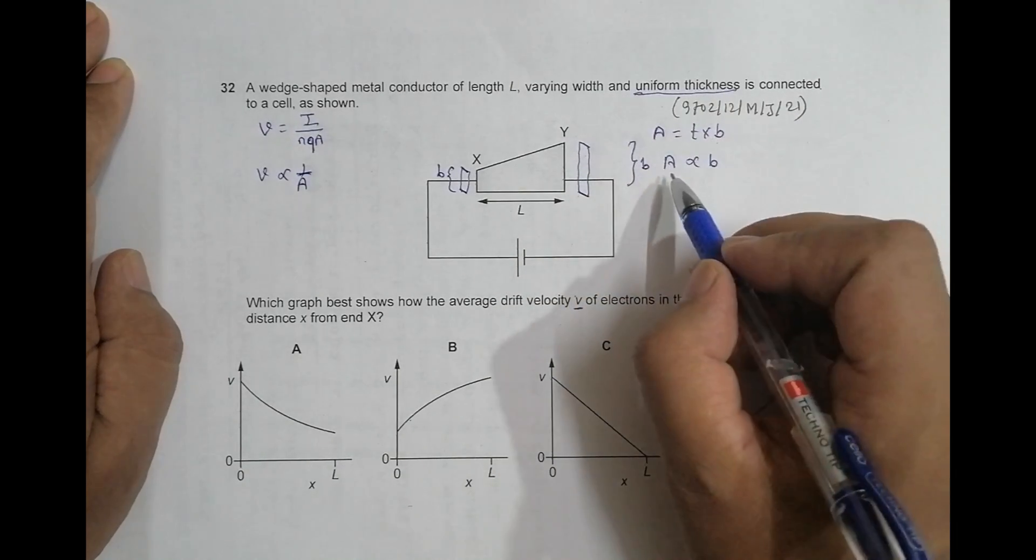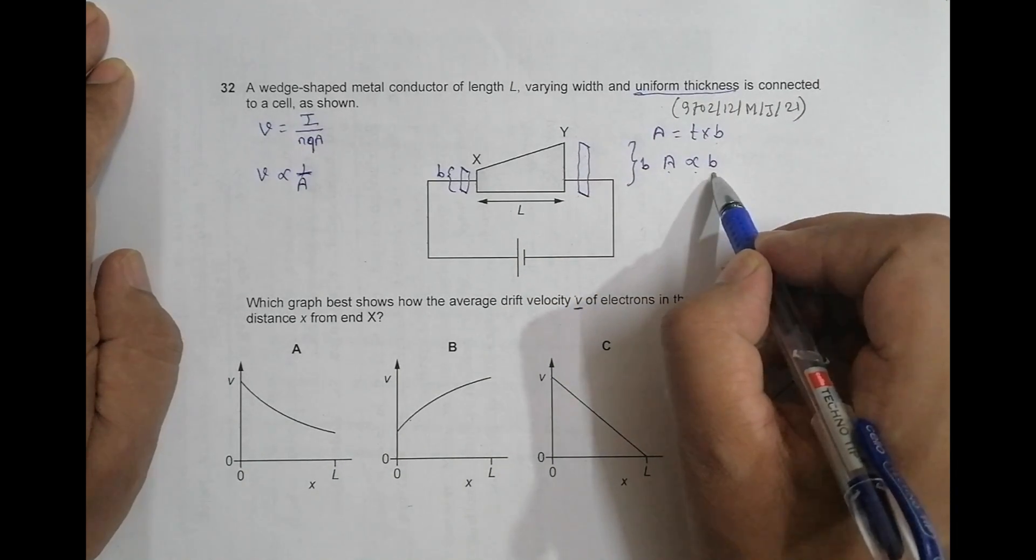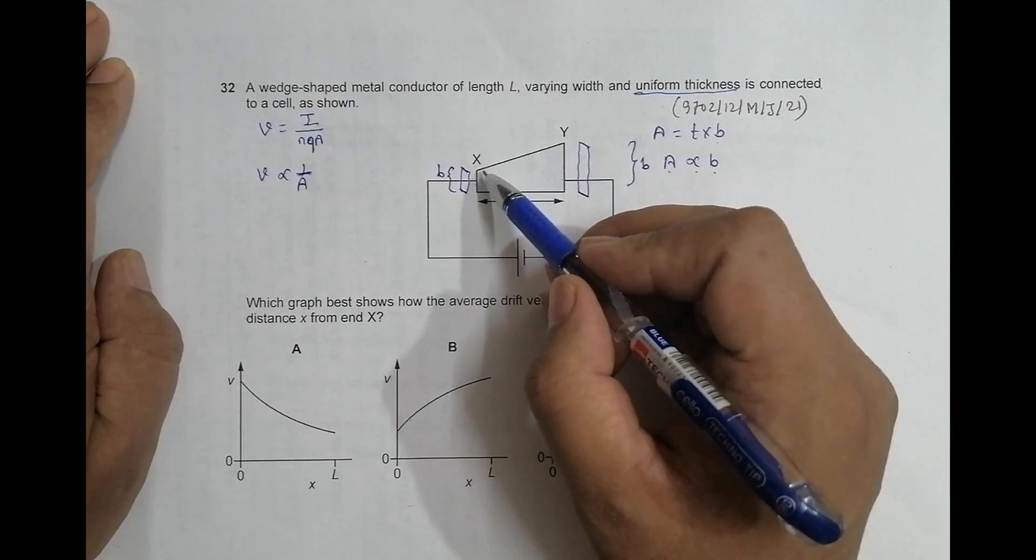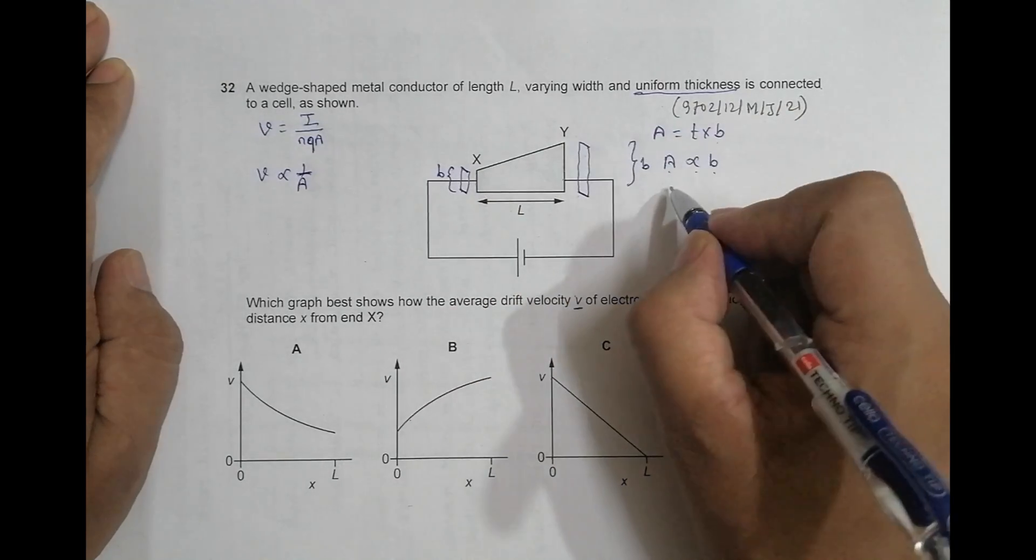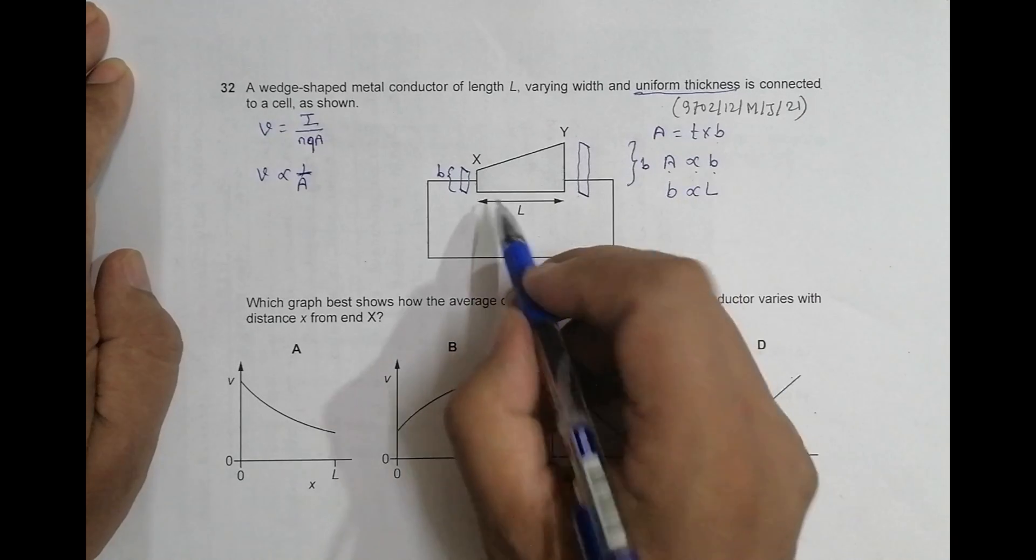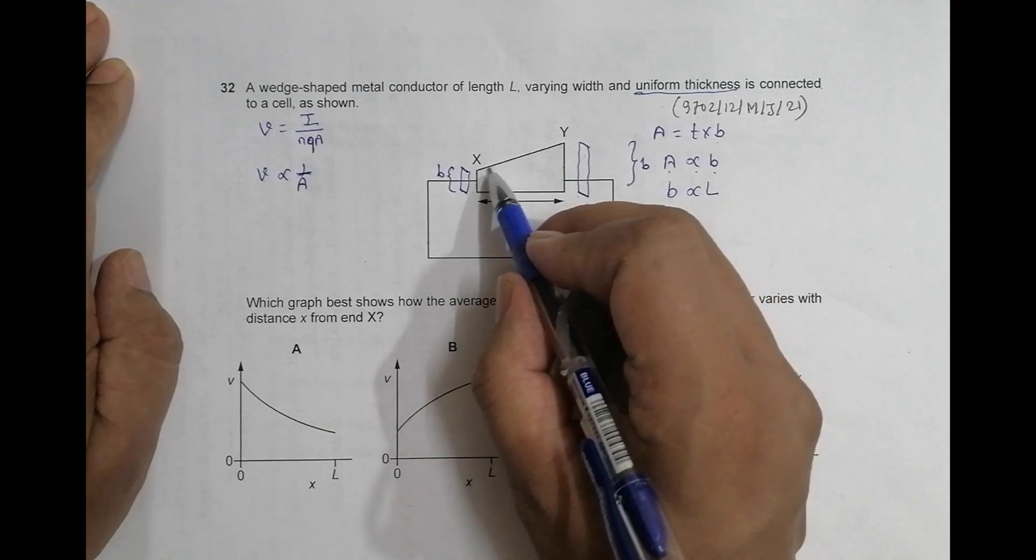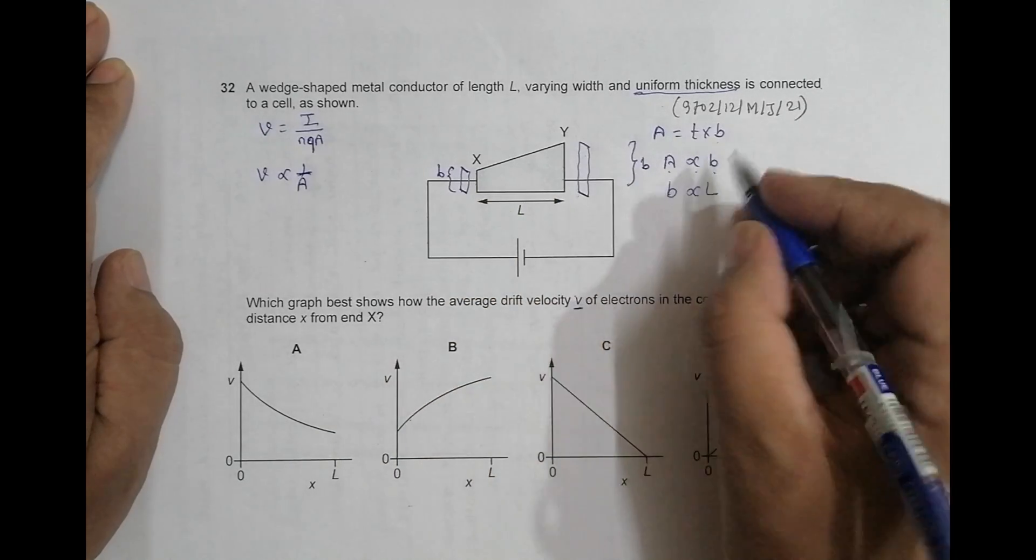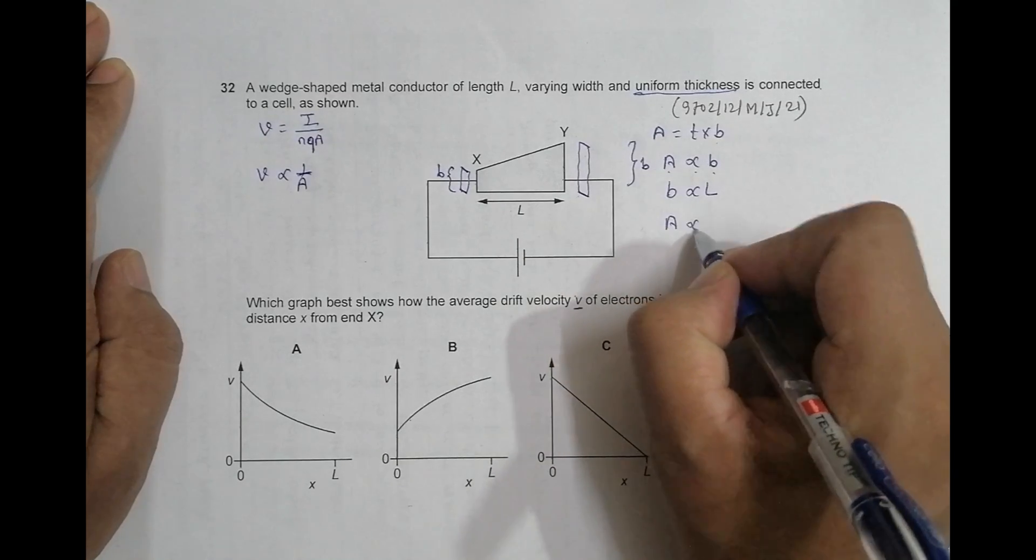Thickness, it says is constant, which means A is proportional to B. And we can also say that this B breadth is proportional to L. As you go from here to here, B increases uniformly. So this gives us A proportional to L.